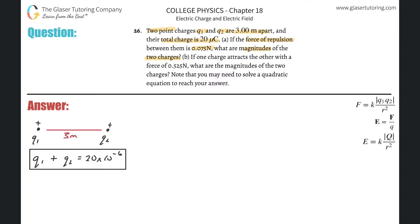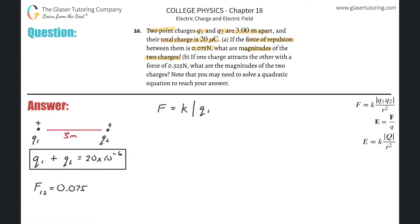They also gave us one other piece of information: the force between Q1 and Q2 is 0.075 newtons. Now let's expand on the force equation. We know the force between two charges equals the electrostatic constant k multiplied by the absolute value of the product of Q1 and Q2, all divided by the distance between them squared.